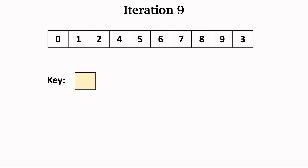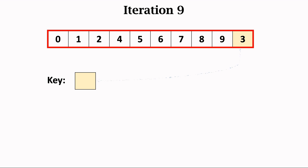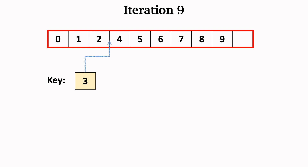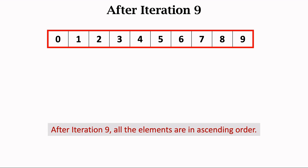Finally, the ninth iteration. We work on all ten elements. Take the rightmost element, 3, out of the array and let 3 be the key. By comparing the key with the remaining elements, we find the right position for inserting the key. Move the elements greater than the key one step rightward to make a room. Then insert the key into the vacant cell. This is the end of the ninth iteration and also the end of the program. Now all ten elements are in ascending order. We have fulfilled the task.